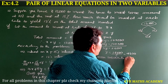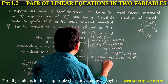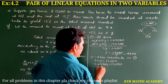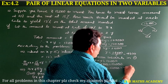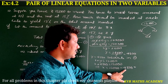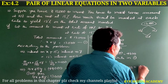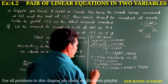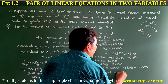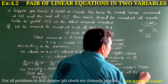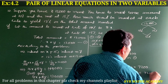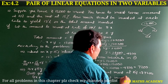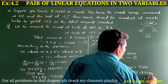Substituting Y equals 4,800 into equation 1: X plus 4,800 equals 12,000. Therefore X equals 12,000 minus 4,800, which is 7,200. So X equals 7,200.